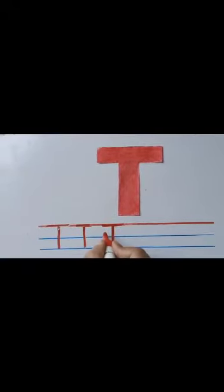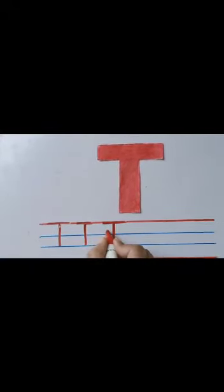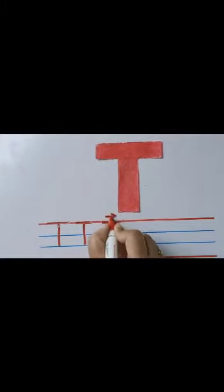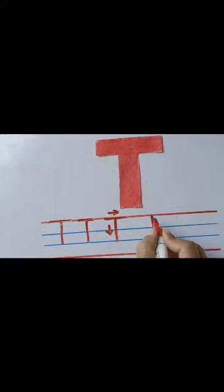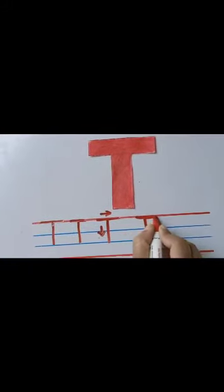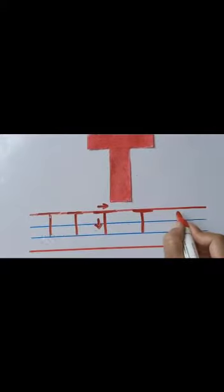Standing line, sleeping line. First, you make a standing line, then a sleeping line. Once again, standing line, sleeping line. This is capital T.